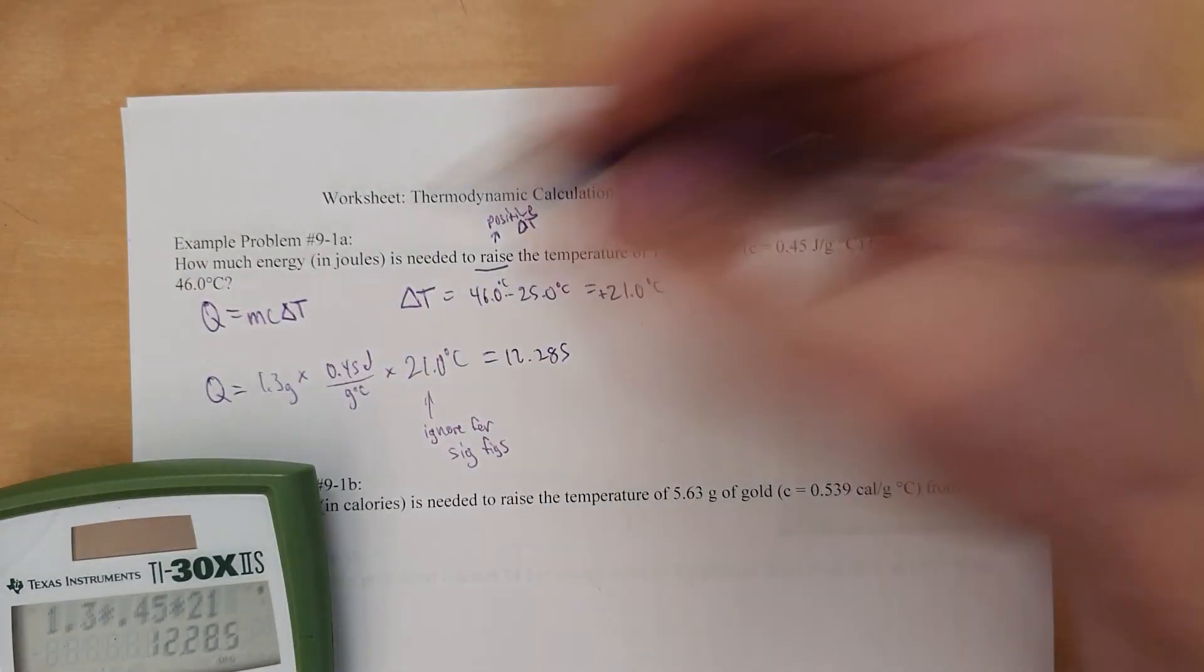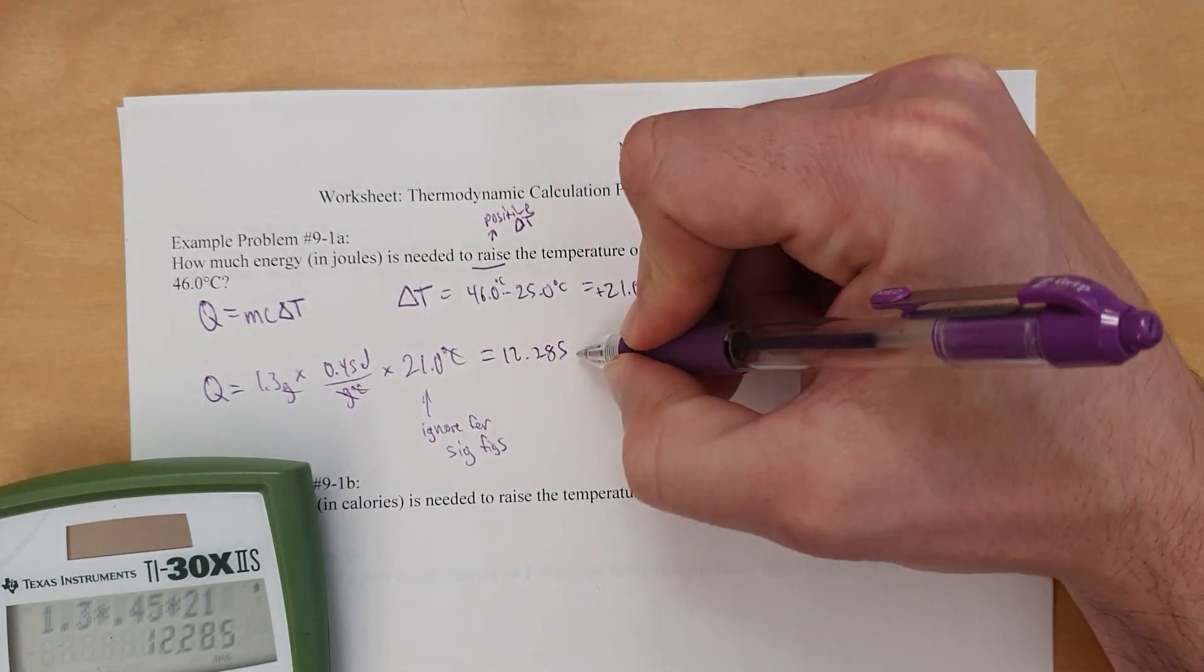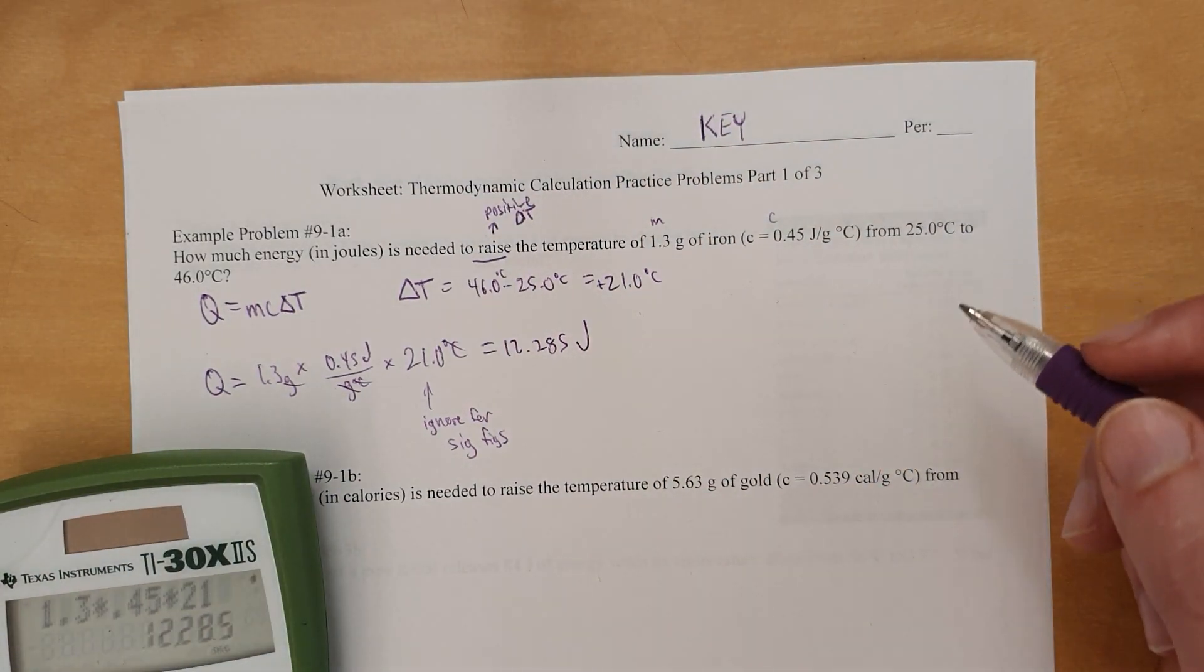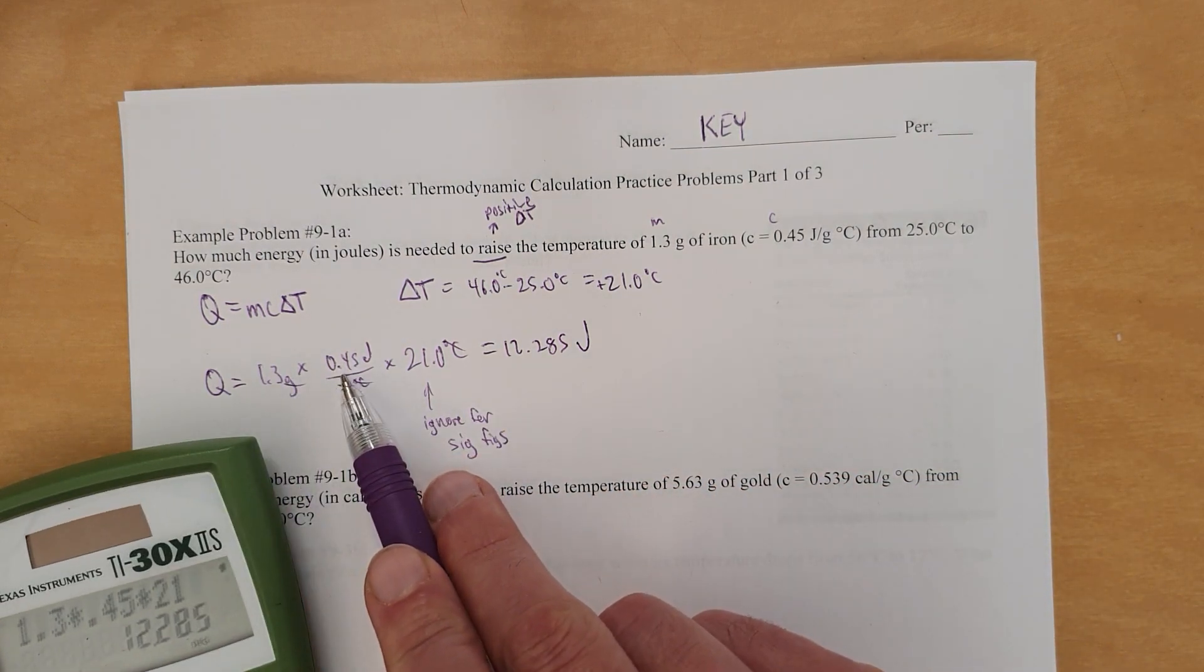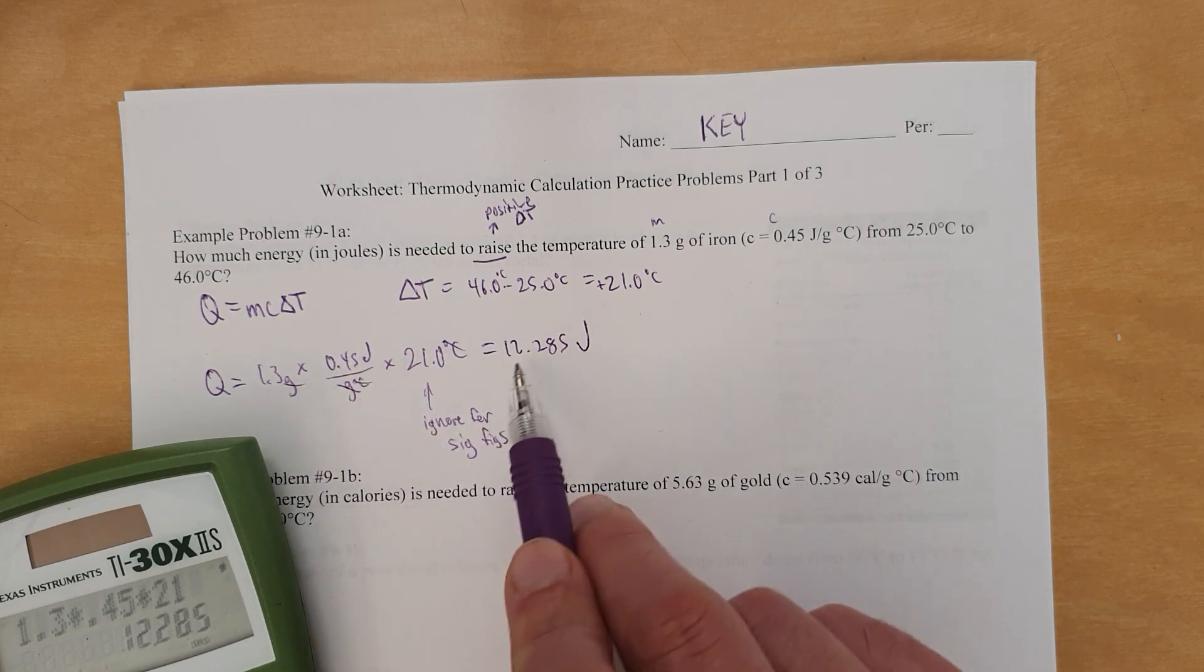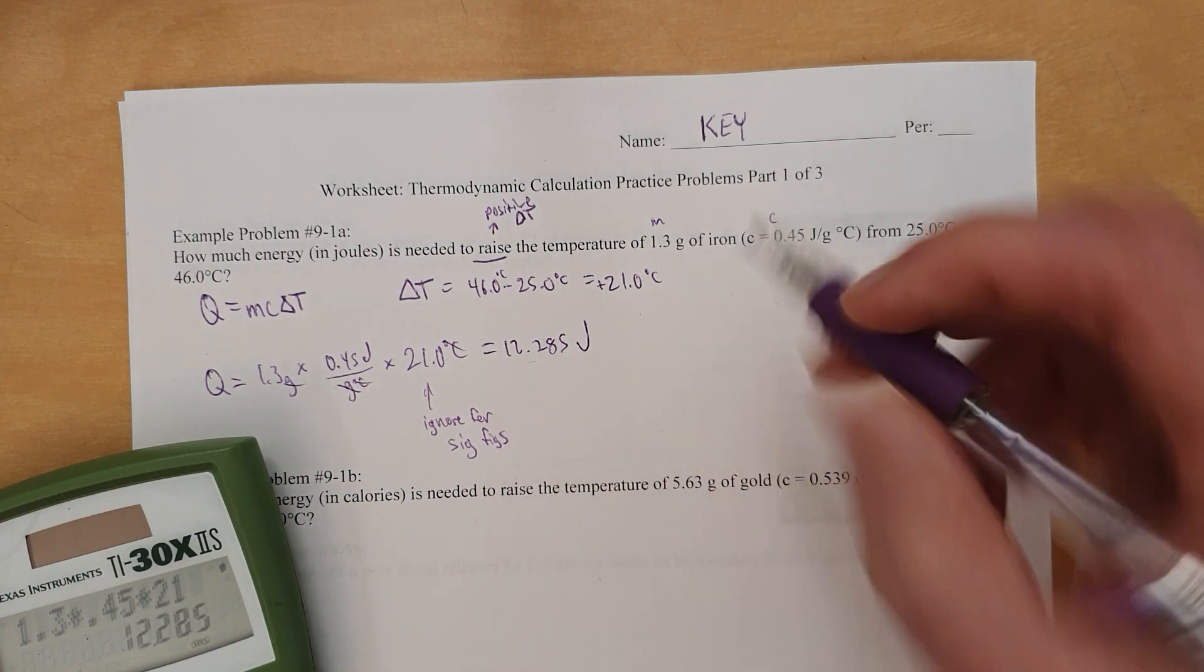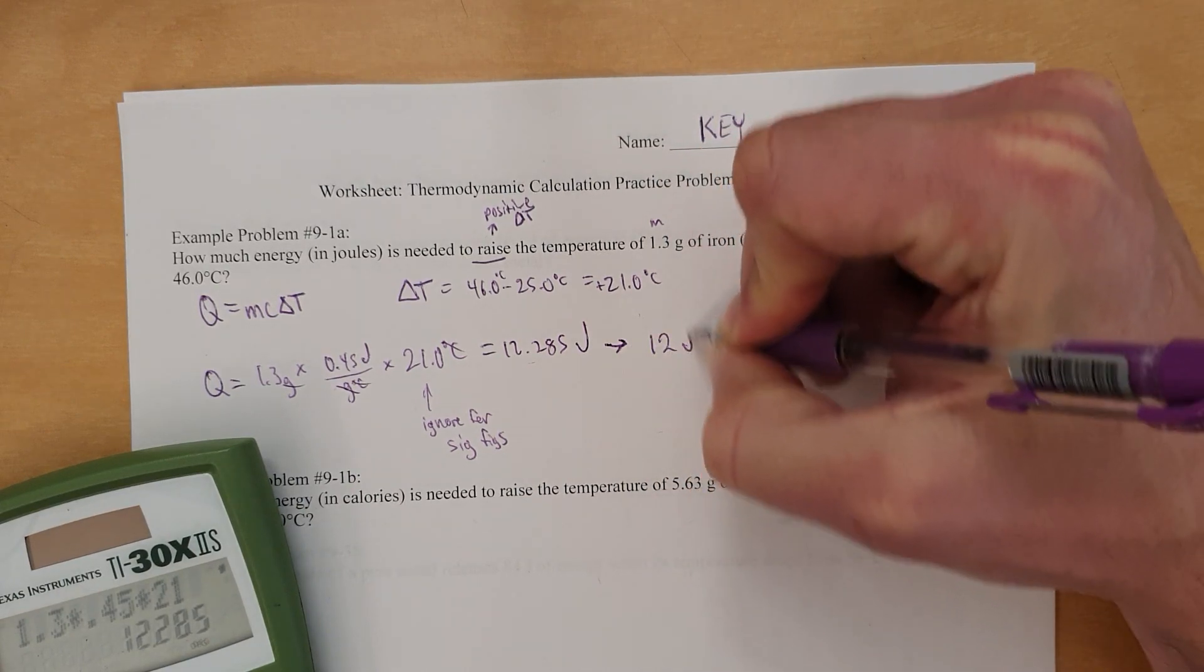And what are our units? Gram cancels gram. Degrees Celsius cancels degrees Celsius, leaving just joules. So that would be the energy in joules. And if we're going to be rounding, we have two sig figs. Two sig figs. Forget that. Don't worry about that number of sig figs. So just two and two. So we've got to round this to two significant figures. So one is the first sig fig. Two is the second sig fig. It's next to a number that's less than five, so it's going to round down.